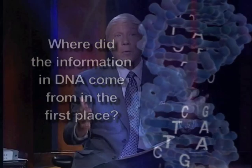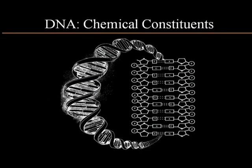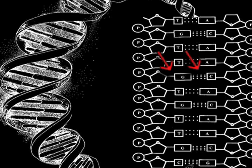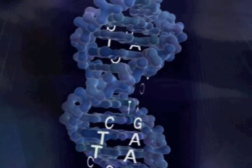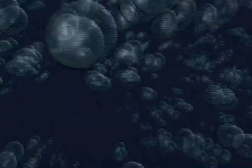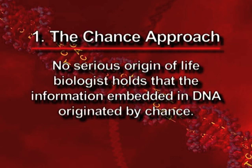What were the theories proposed and why were they knocked down? The first approach was the chance approach — just to say that all these arrangements of the bases, the information-carrying subunits in DNA, were a byproduct of chance assemblages in a prebiotic soup, some ancient ocean where chemicals floated around and arranged themselves. No serious origin-of-life biologist has taken that seriously since the 1960s, and for good reason: the complexity and amount of information required was way beyond what chance assemblages could produce.